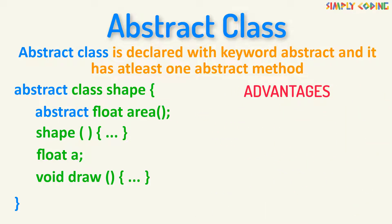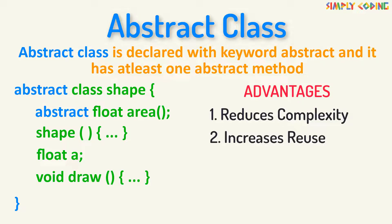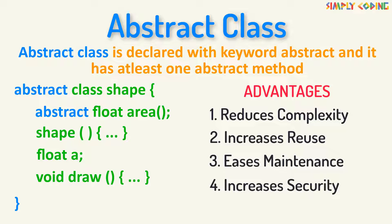The advantages of abstraction in Java are that it reduces complexity as only necessary details are exposed. It increases software reuse and avoids code duplication. It eases maintenance as all internal working is blocked, and it helps to increase the security and confidentiality of an application.